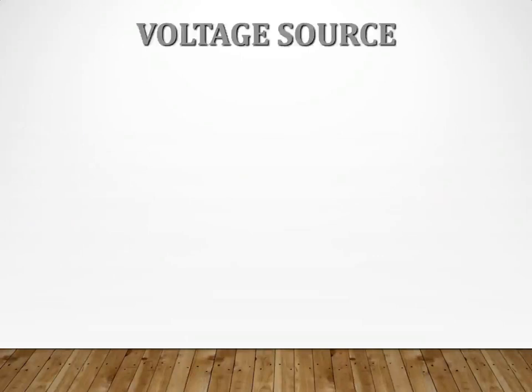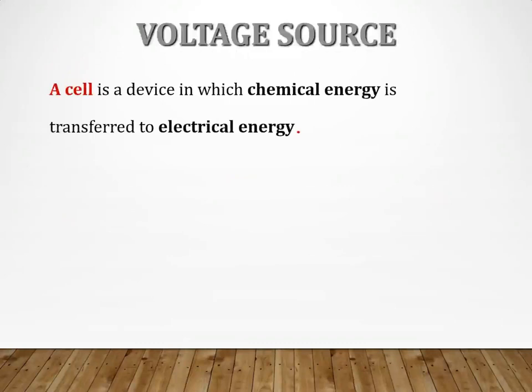Now, for current to flow, we must have the voltage source. And in this regard, our voltage source would be a cell, which is a device in which chemical energy is transferred into electrical energy. The cell itself does have the chemical energy inside, but what goes through the circuit is no more chemical. It's electrical. And this is how the cell looks like. There's a very small dry cell.